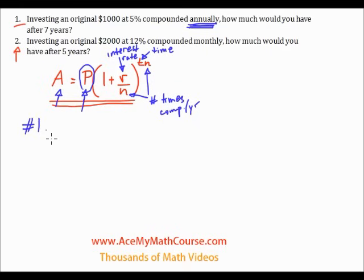So for question number one here, I have a thousand dollars invested at five percent compounded annually. So A is what we want to find out. P is a thousand. Then I have one plus R, which is five percent. Since we have five percent, I'll need to rewrite this as 0.05. All you need to do is divide the five by 100.